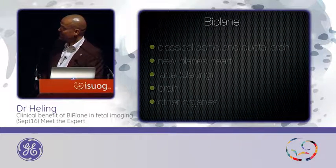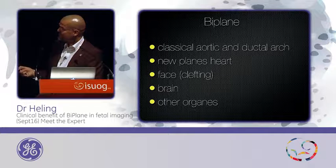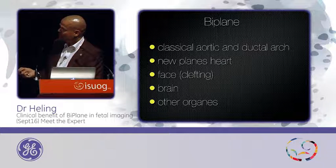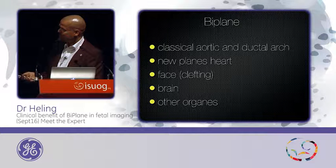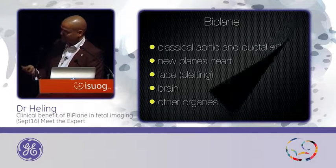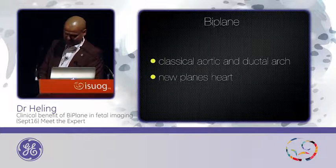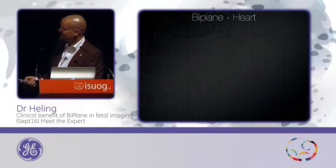In which organs can we use BiPlane? First, in the heart — the classical aortic and ductal arch — then we have the chance for new planes in the heart, then in the face, especially for examination of clefts, in the brain, and at the end I will give you some examples for other organs. We start with the heart and first with the classical aortic arch.